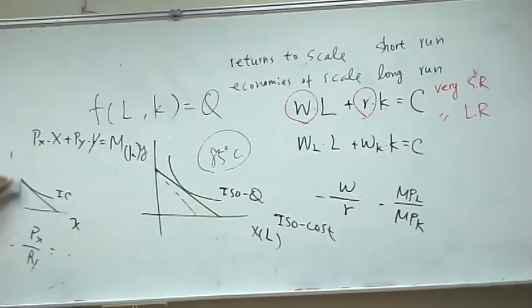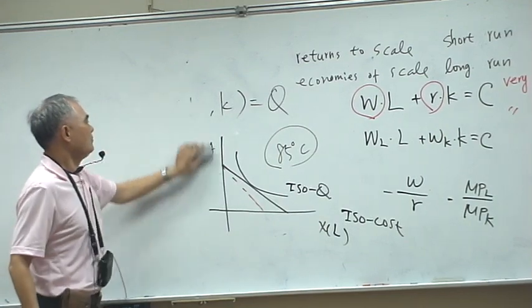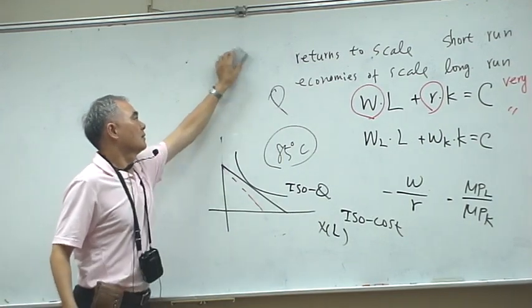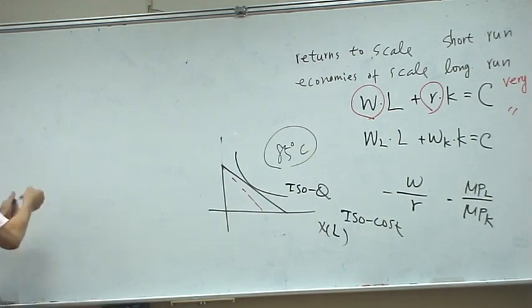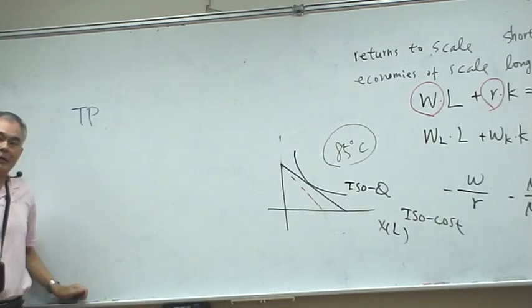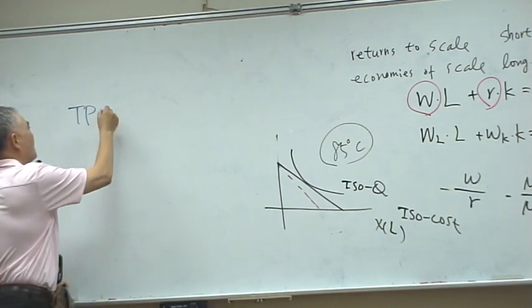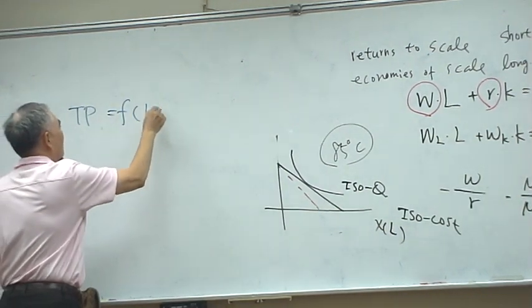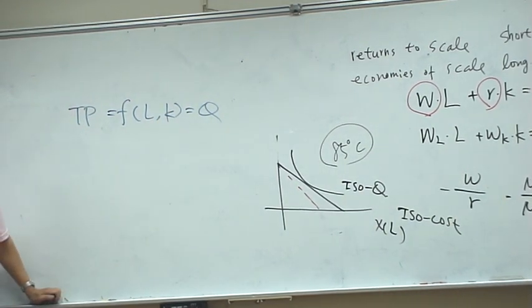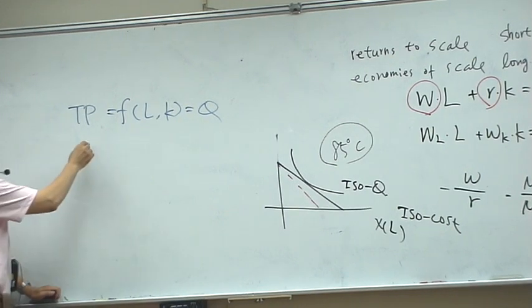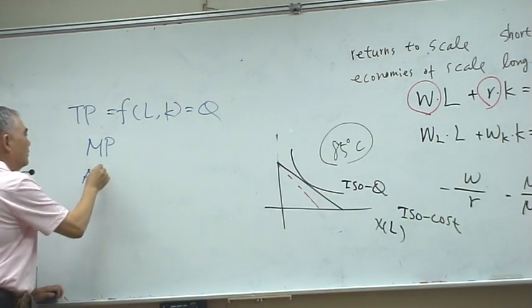And production is indeed very complicated. We have total production, I call total product. Total production, I call total product. And then you have to have what? Marginal product, and also, average product.